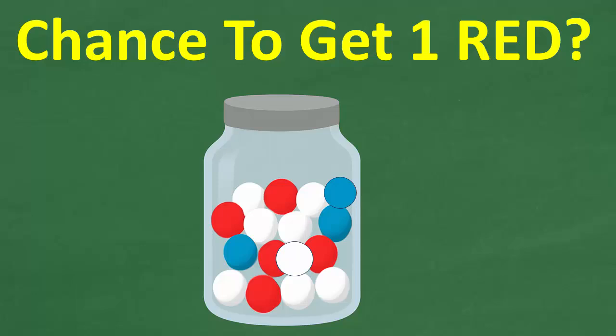So here is the problem. We have a jar here with various marbles in them. Now, specifically, inside this jar, there are five red marbles, three blue marbles, and eight white marbles. And the question is, what is the chances of picking one red marble?